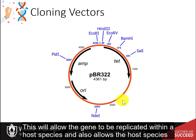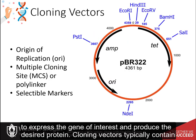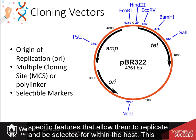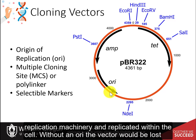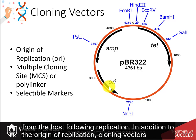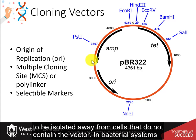This will allow the gene to be replicated within a host species and also allows the host species to express the gene of interest and produce the desired protein. Cloning vectors typically contain specific features that allow them to replicate and be selected for within the host. This includes an origin of replication, which allows the vector to be recognized by the host's DNA replication machinery and replicated within the cell. Without an ori, the vector would be lost from the host following replication. In addition, cloning vectors usually contain a selectable marker that allows host cells containing the vector to be isolated away from cells that do not.